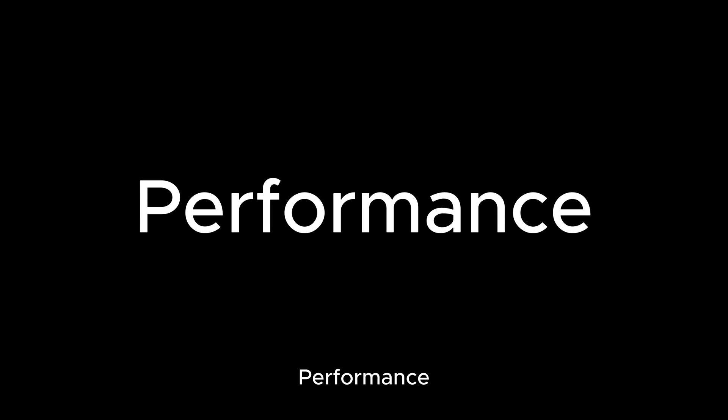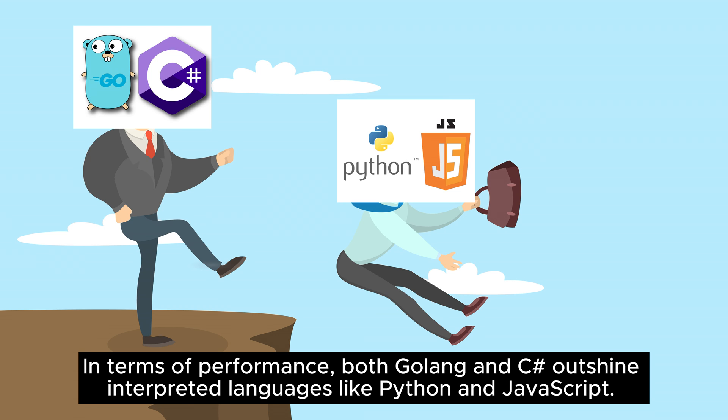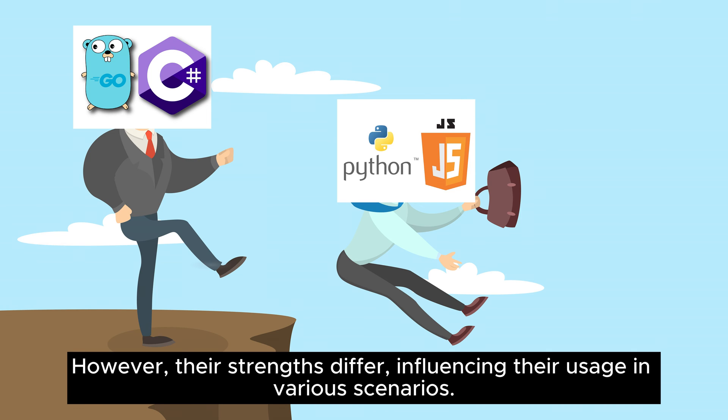In terms of performance, both Golang and C-sharp outshine interpreted languages like Python and JavaScript. However, their strengths differ, influencing their usage in various scenarios.